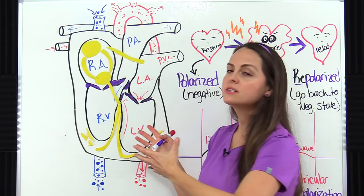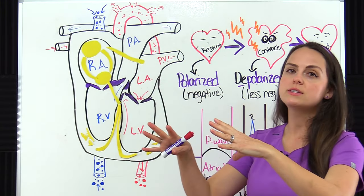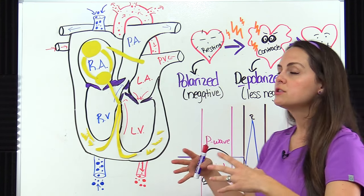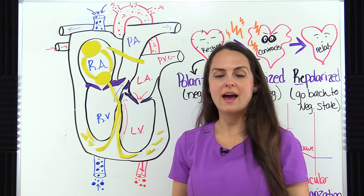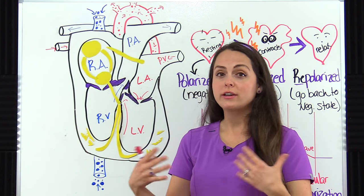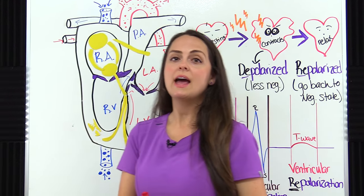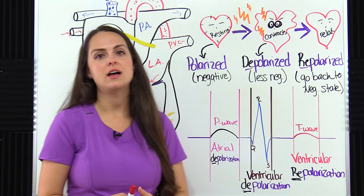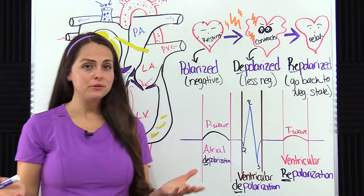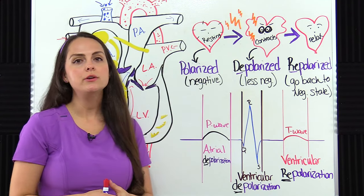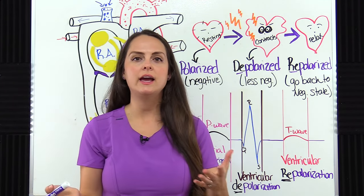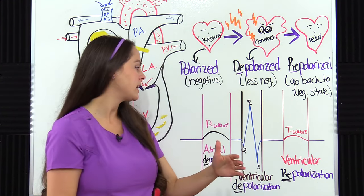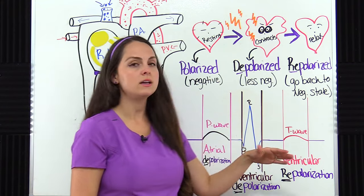We need the electrical conduction system to send off these electrical signals that target the cells of the atria and the ventricles so they will contract and relax. In order for the electrical conduction system to do this, it has to cause repolarization and depolarization of these specialized heart cells. These are two terms that you really want to make sure you understand whenever you're studying EKG interpretation, because they really lay the foundation for understanding this PQRST complex.